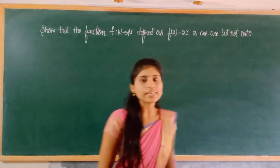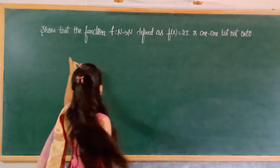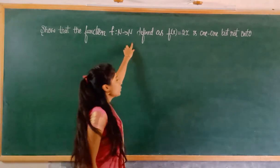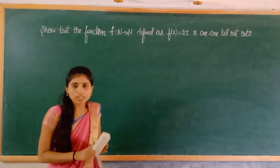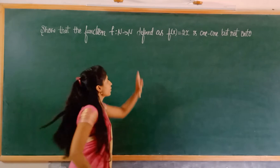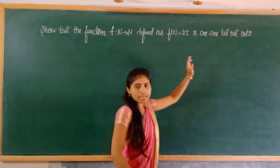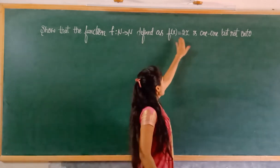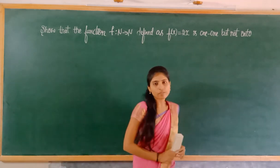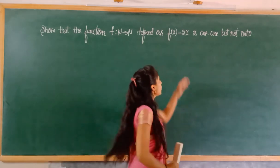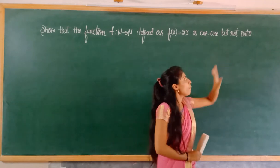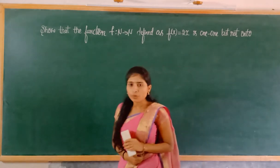The first problem is: show that the function f from natural number to natural number, defined as f(x) = 2x, is one-to-one but not onto. We have to prove this here.